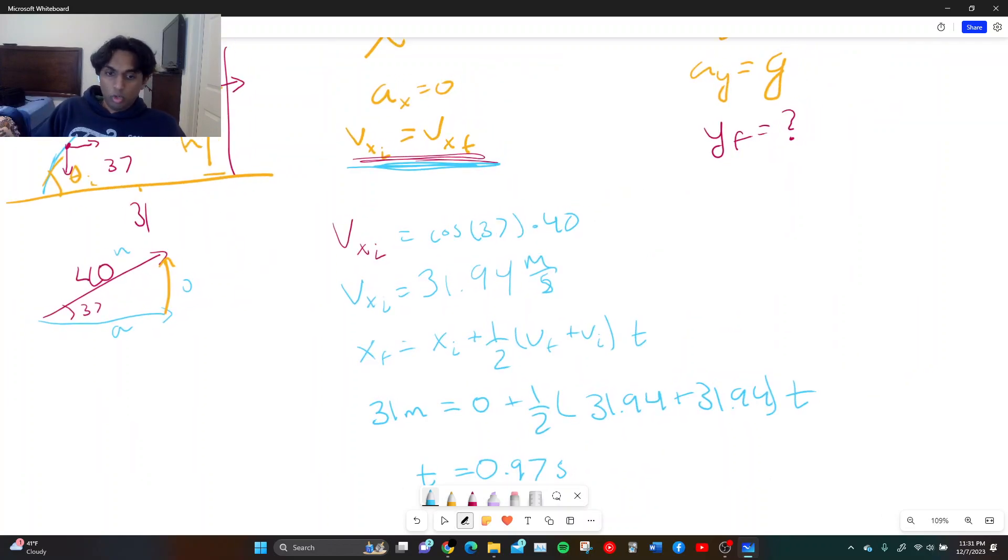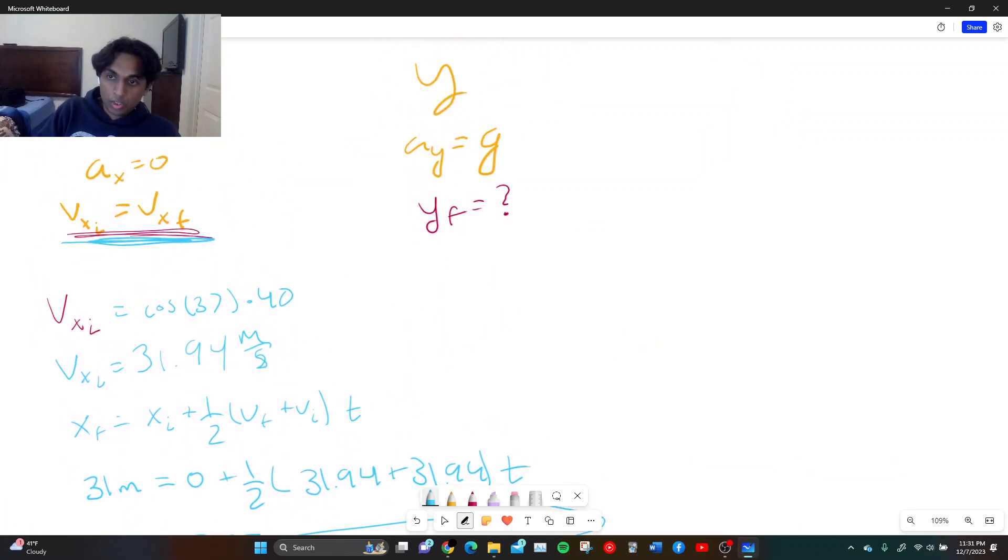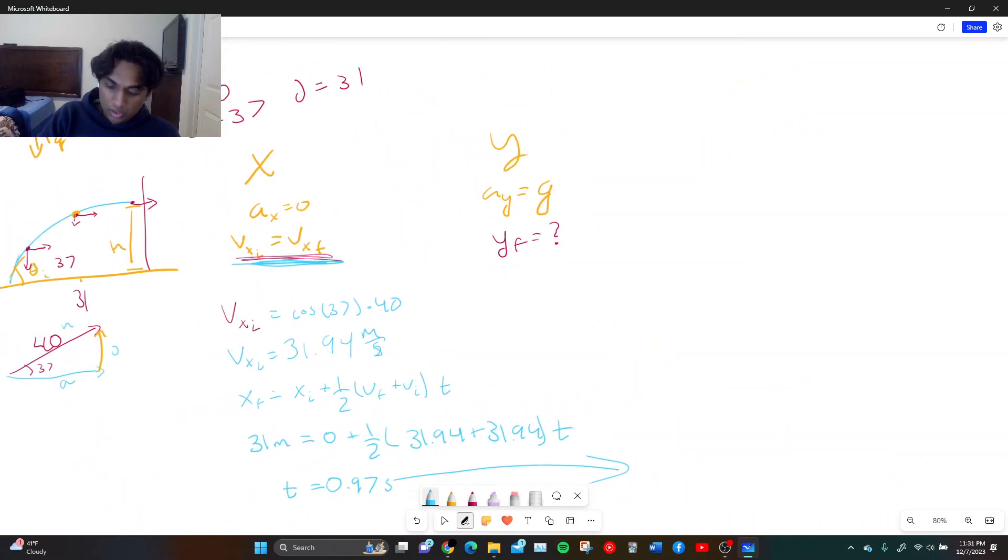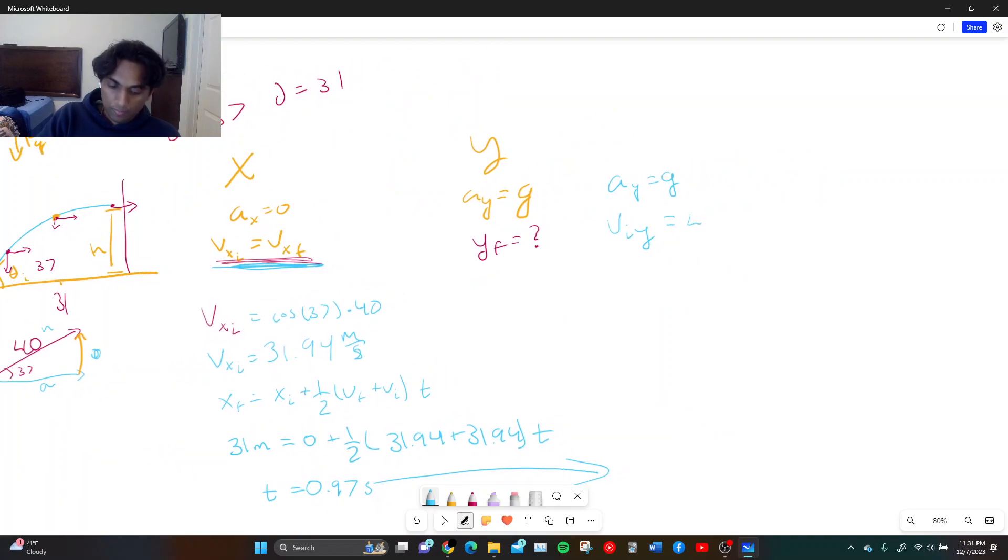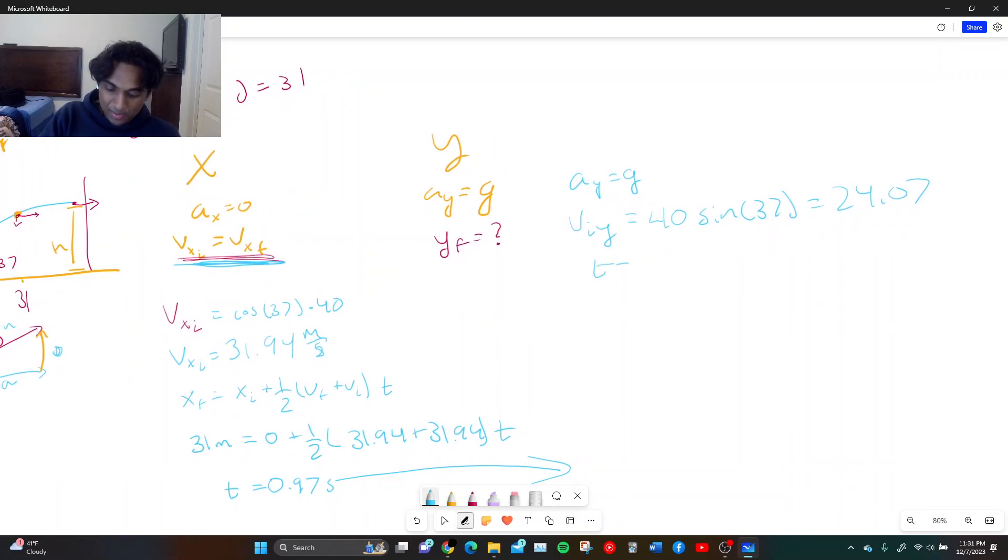So that is our time. Why does that help us? What good does time do? Remember, time is the only thing that can go from x to y. So now we can use this time to go into our things. So now we have a y still. We still have this, obviously. a y is equal to gravity. We have velocity initial y. We can use this trig relationship down here to get this equal to 40 sine of 37 equal to 24.07. Make sure you calculate it in degrees. We know that time now is equal to 0.97 seconds.